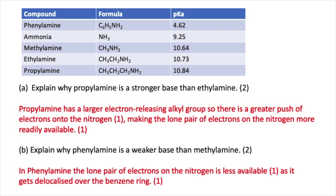Question one asks why propylamine is a stronger base than ethylamine, for two marks. Propylamine has a larger alkyl group, and alkyl groups are electron-releasing, so there is a greater push of electrons onto the nitrogen — one mark. This makes the lone pair of electrons on the nitrogen more readily available — one mark.